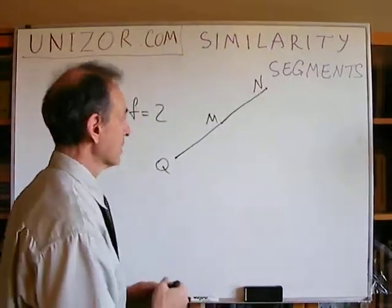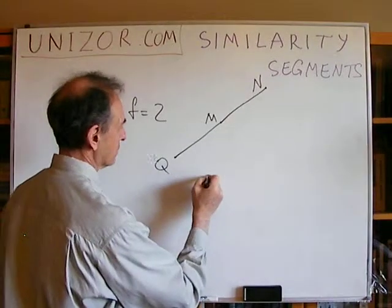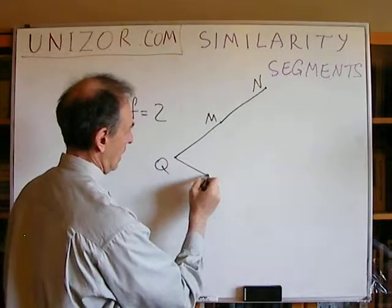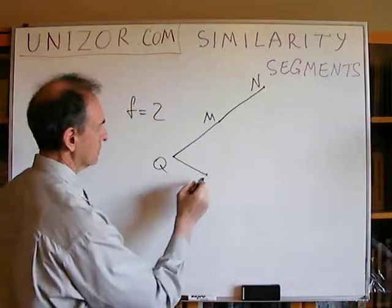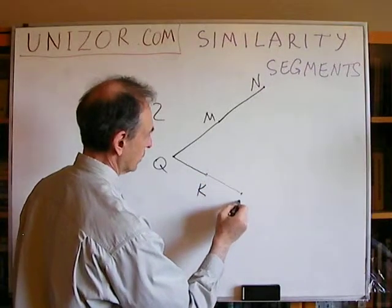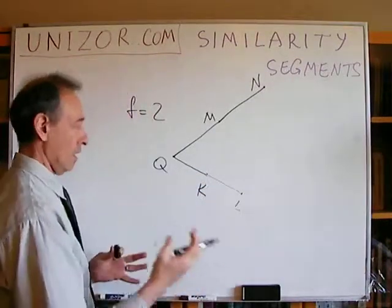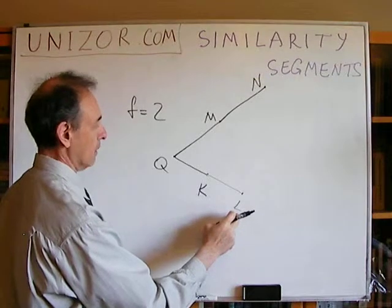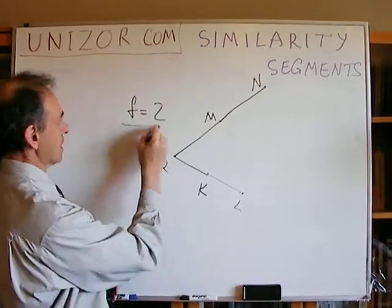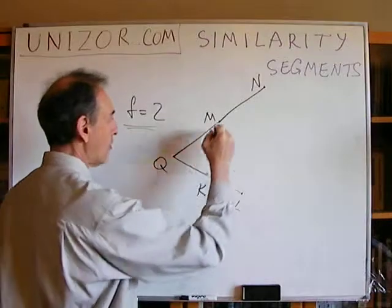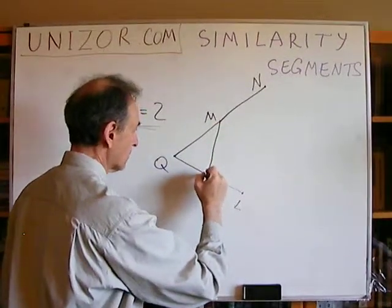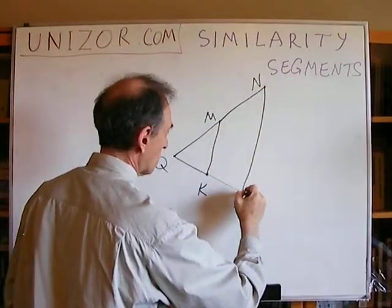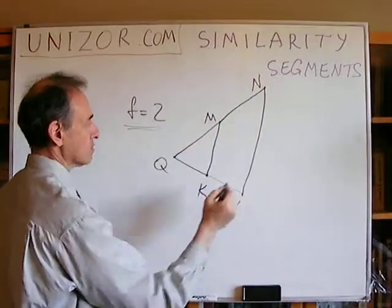What is more interesting is the following. Let's say you have another point, point K. And we also scale it by the same factor into point L. Obviously, segment QK will be transformed into segment QL, length of which is exactly F times greater. But how about this segment in between? Well, it will be transformed into this segment, M into N and K into L.